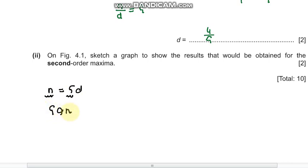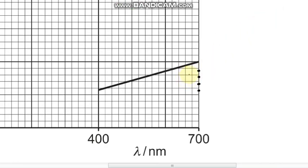We know that our order and our gradient are directly proportional. So for the fourth order, the gradient, and now it's asked for a second-order maxima gradient, so the existing gradient would be half.